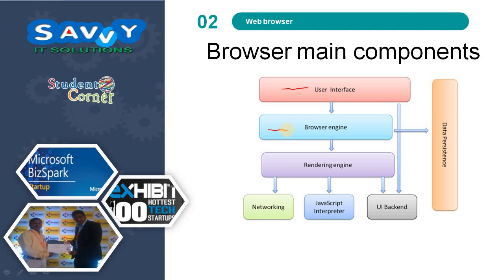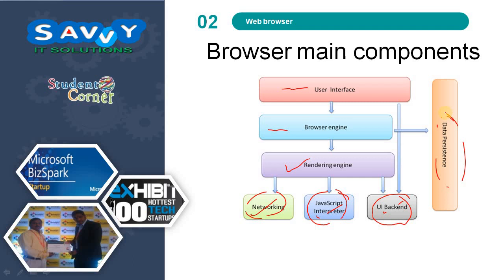The browser engine is responsible for displaying the HTML content. The rendering engine is responsible for communicating from the browser engine and requesting the support of networking, JavaScript, or UI backend. Networking means it takes the HTTP request and responds accordingly. The JavaScript interpreter runs JavaScript code. UI backend handles combo boxes, text boxes and other interface elements. Data persistence is the temporary storage available in the web browser — bookmarks and history are stored there. In the next slide, we explain each component of the web browser in detail.